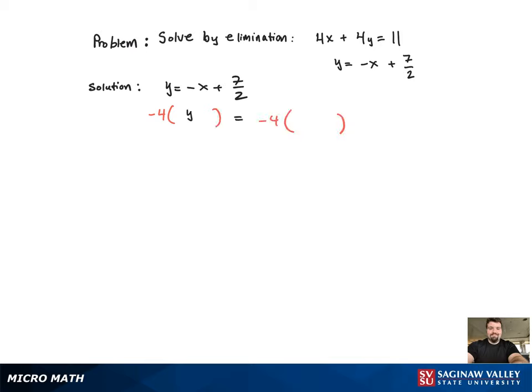What this does is it gives y a coefficient of negative 4, which is the same coefficient as in the first equation with an opposite sign. So now when I bring the first equation down and add the two equations, the y variable will cancel out.